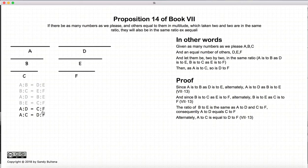And again, using Proposition 13, we have this proportion. So if this is true, then the ratio of A to C is equal to the ratio of D to F. Again, Proposition 13.